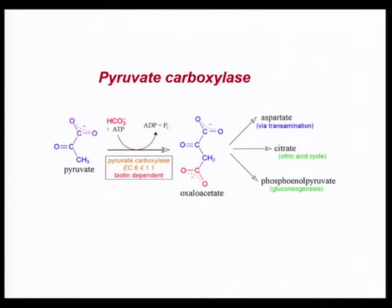Looking at this reaction, we have already seen how pyruvate can have one more carbon atom added by way of adding a carboxyl group to its structure. You get oxaloacetate, which is a very important intermediate compound that enters into the synthesis of aspartate, citrate, and phosphoenolpyruvate. Now we will brush up a little more on the functional role of biotin.